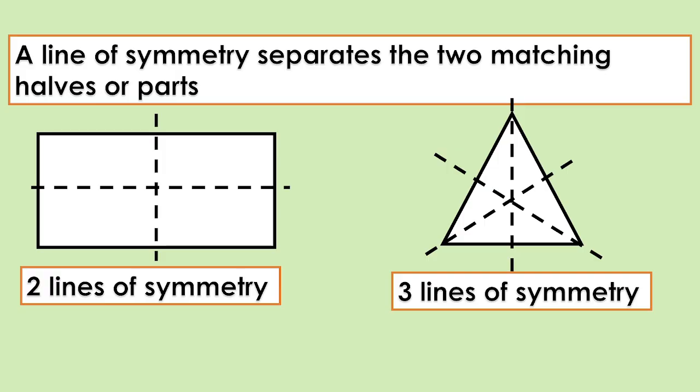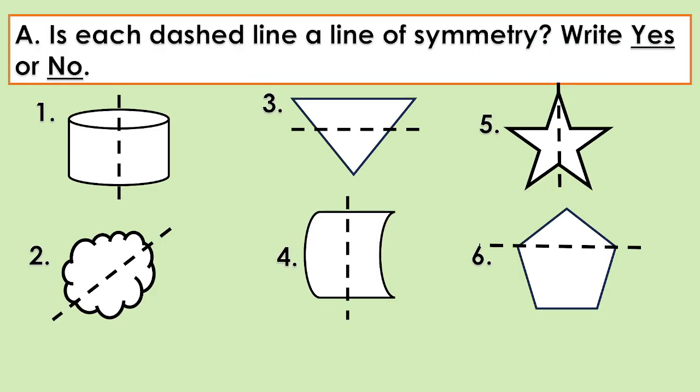A line of symmetry separates the two matching halves or parts. Let's answer this. Letter A: Is each dashed line a line of symmetry? Yes or no? Number one — the answer is yes.